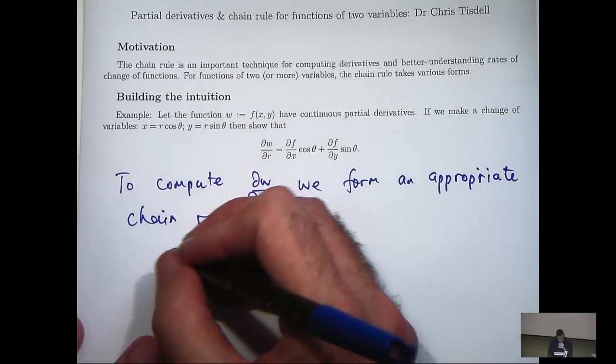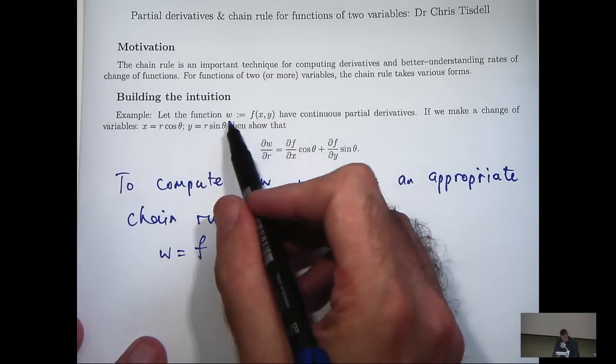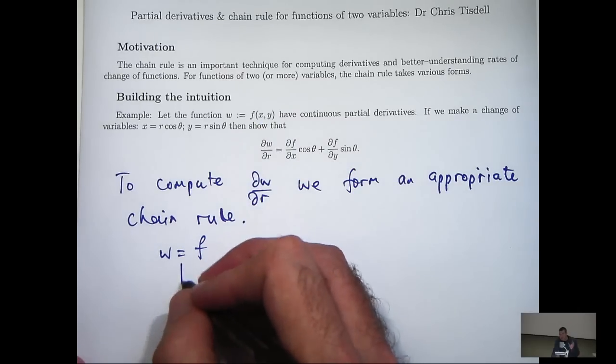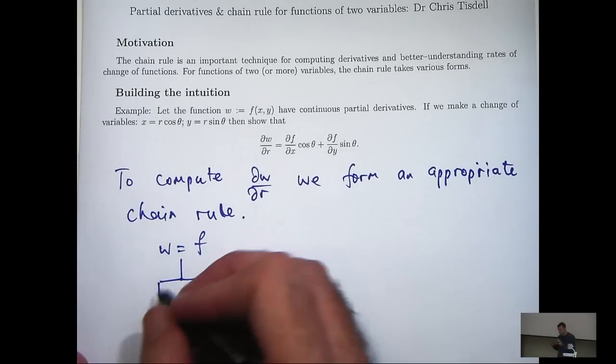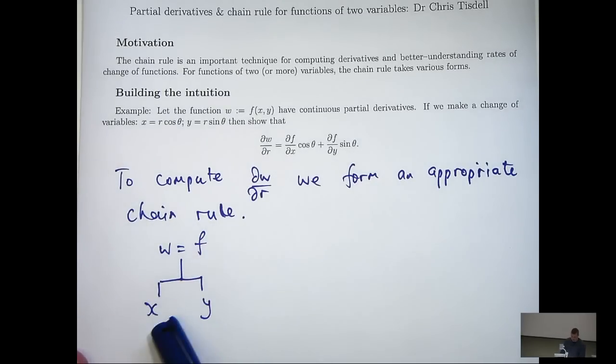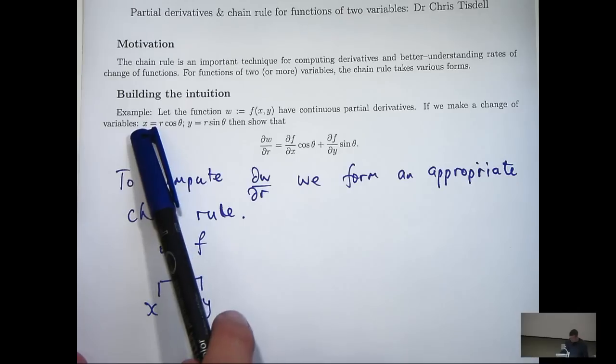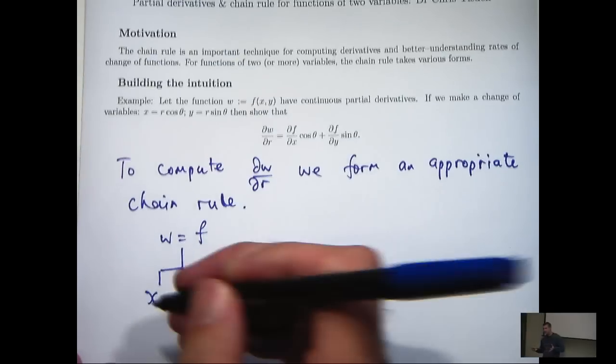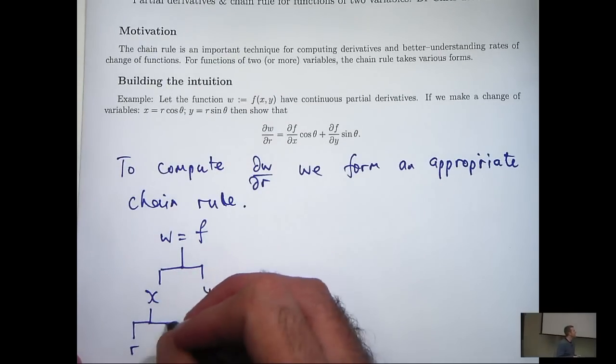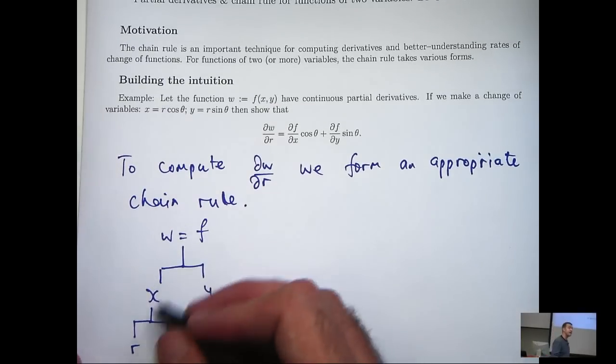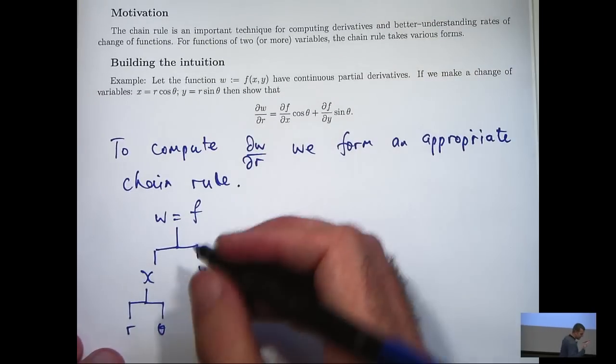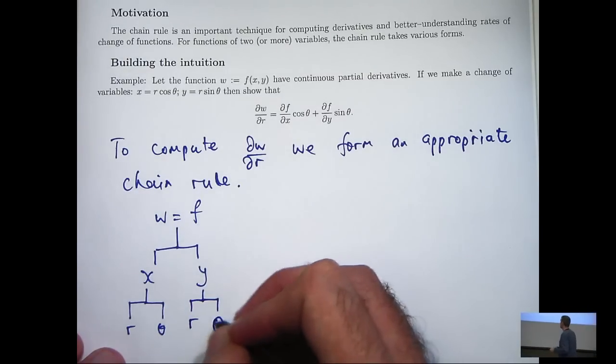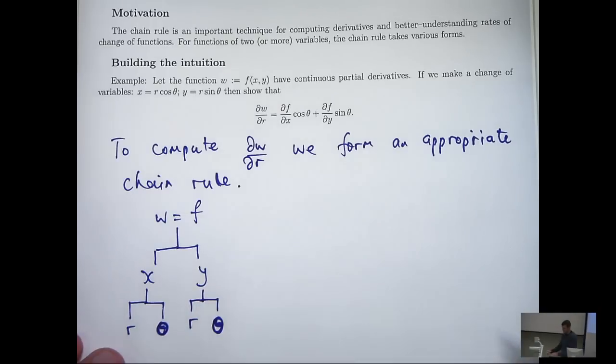First of all, we identify that w equals f and f depends on two variables, x and y. So I draw a little splitting branch down here, and we can identify the variables of f. Then I move on and go, okay, the variable x depends on two other variables, r and theta. So again, I draw some little branches showing the dependence of x on r and theta, and the same with y. So y depends on r and theta.